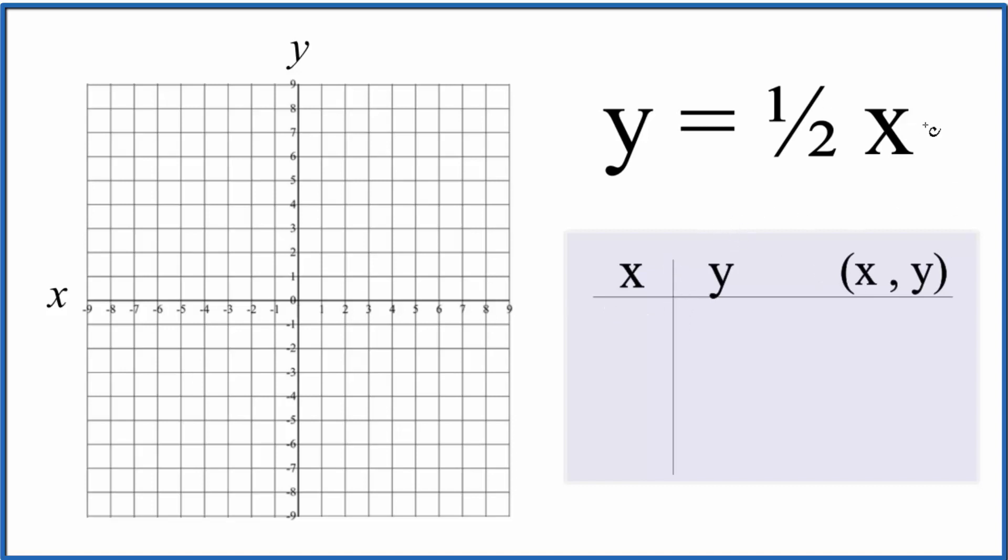So let's put some values in for x. I think I'm going to start with 2, and the reason is one-half times 2 gives me 1, so I don't need to deal with fractions. How about a zero? So we have one-half times zero, that just gives us zero. And then I'll put a negative 2 in. One-half times negative 2, that'll give me negative 1.